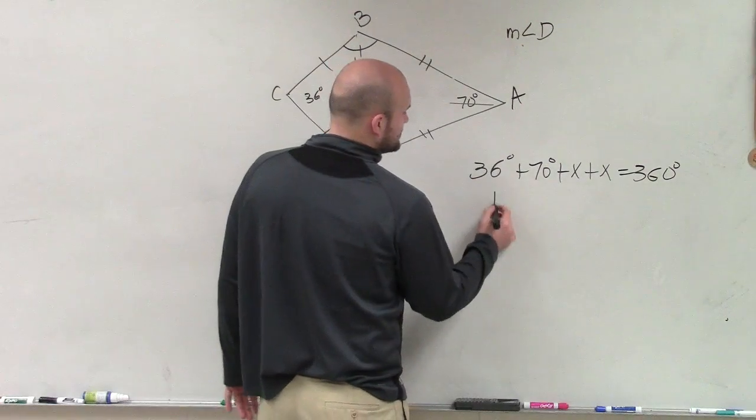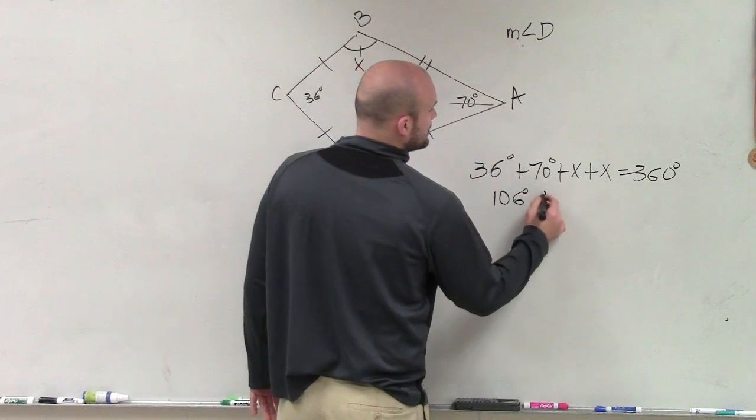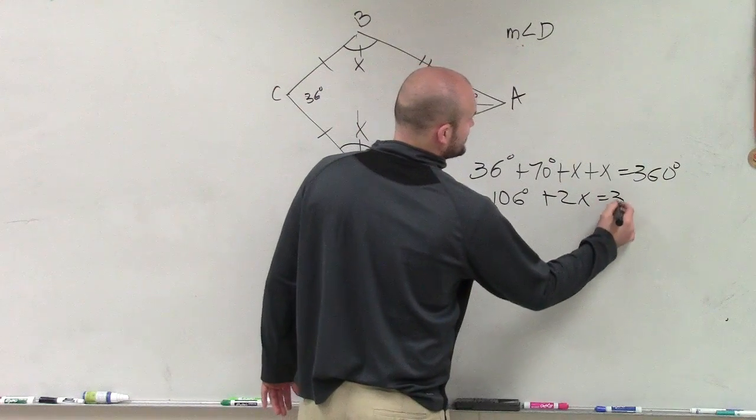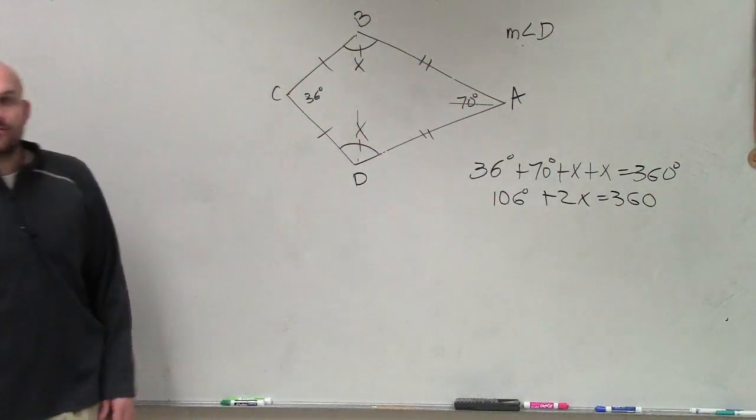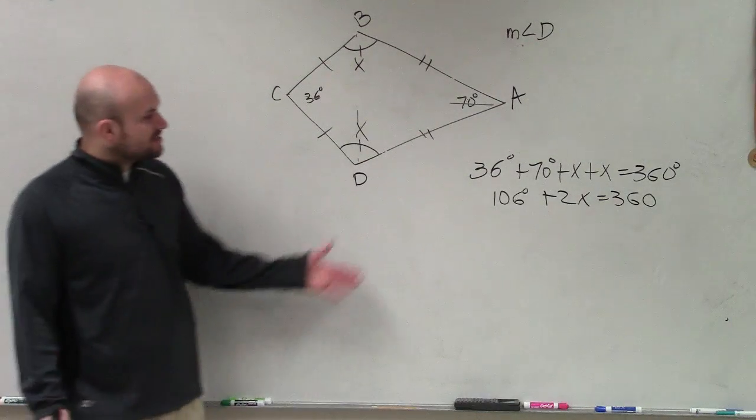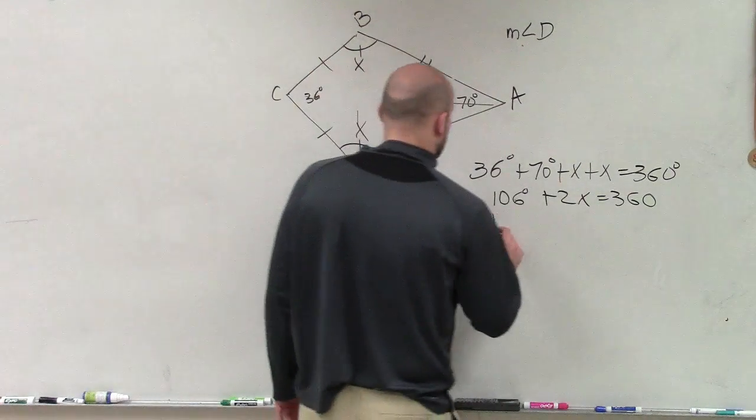So now we add them up. So that's 106 degrees plus 2x equals 360. Now, ladies and gentlemen, we have a two-step equation. So we can solve the two-step equation by using our inverse operations.